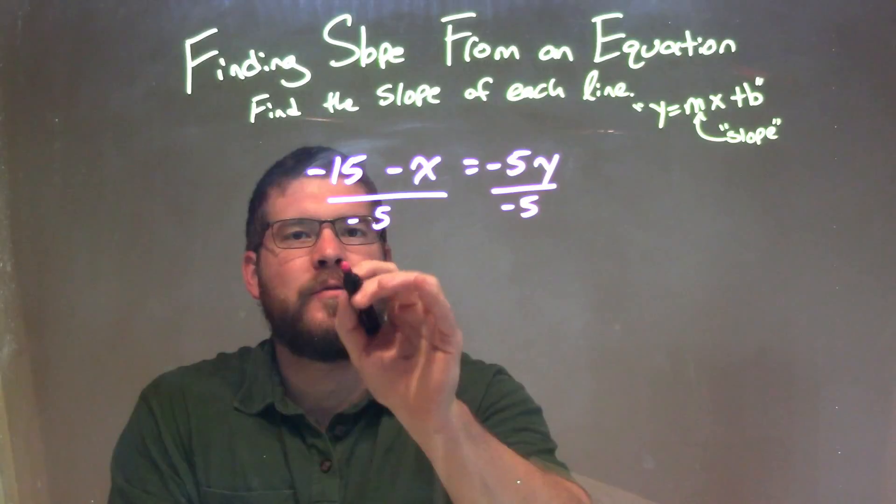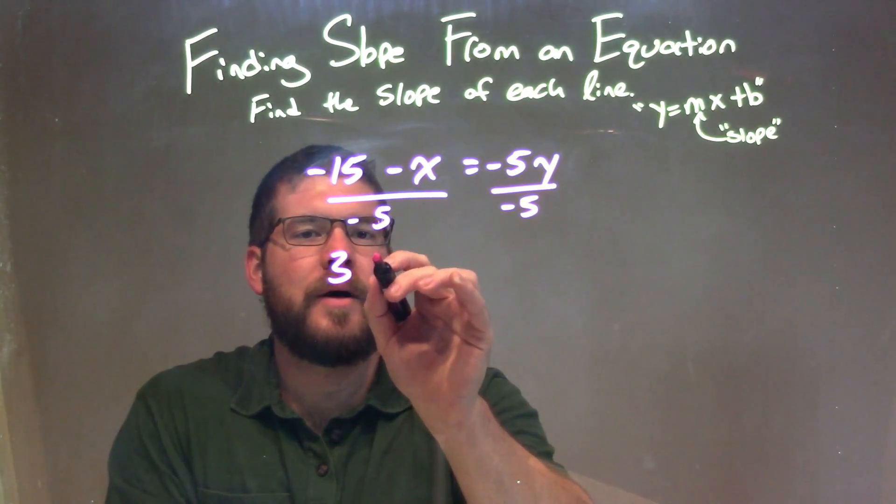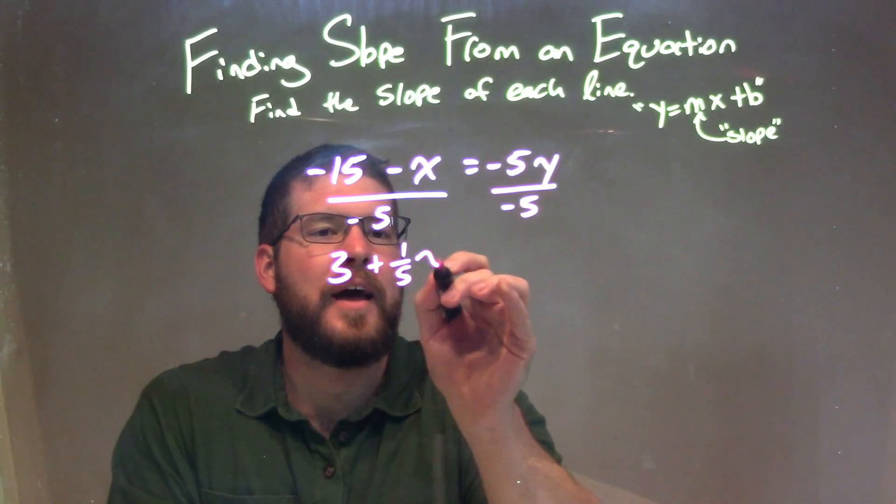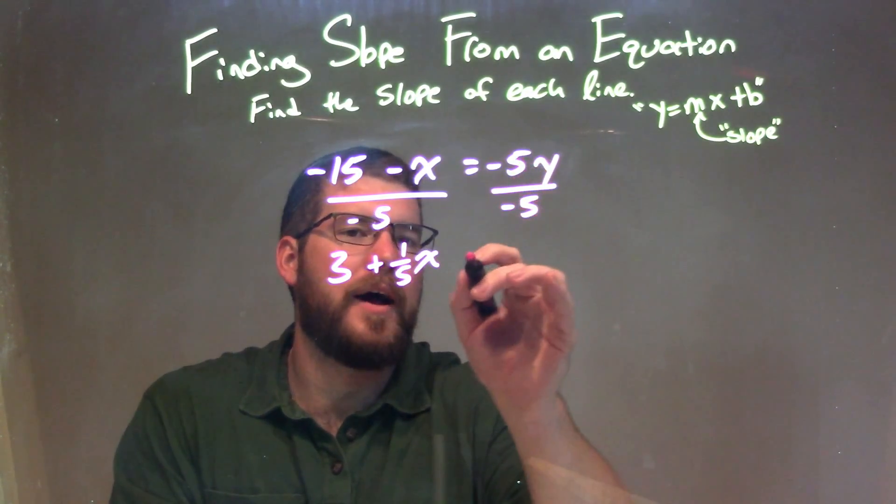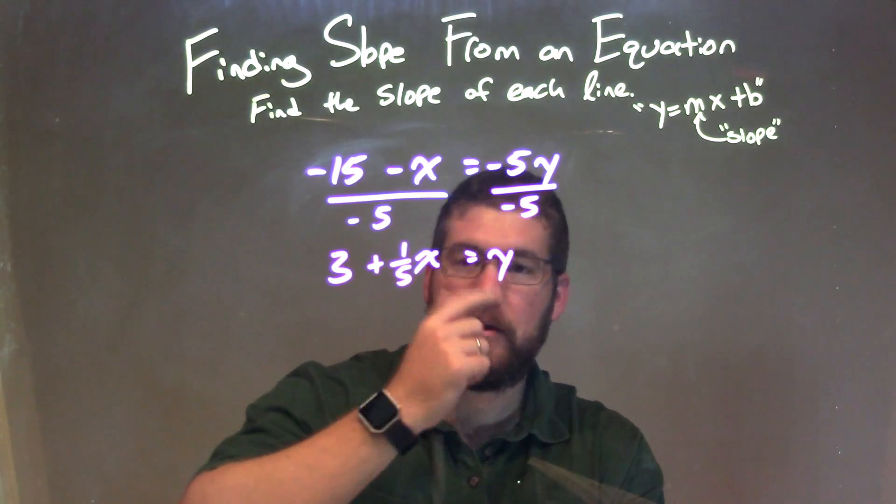Negative 15 divided by negative 5 is positive 3, and negative x divided by negative 5 is positive one-fifth x. Then here, we have y isolated.